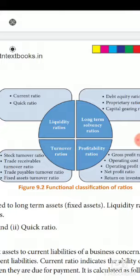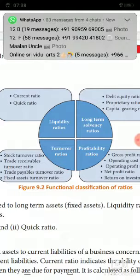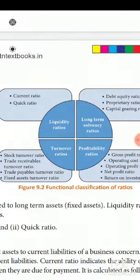And profitability ratios include GP ratio, NP ratio, operating cost ratio, operating profit ratio, and return on investments ratios. These are the same ratios, but they are classified under different headings.